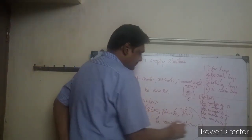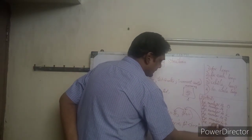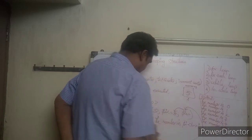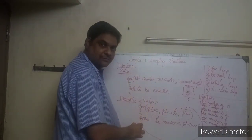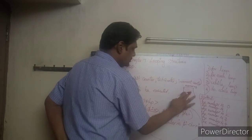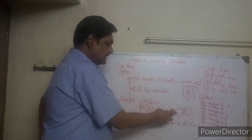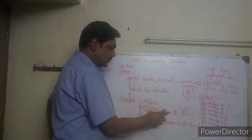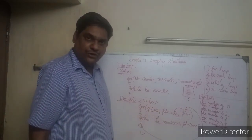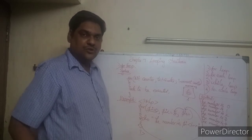After printing 5, `i` becomes 6. The condition is checked: is 6 less than or equal to 5? True or false? False. So the loop stops — it exits after the closing curly braces. That is how the for loop works.